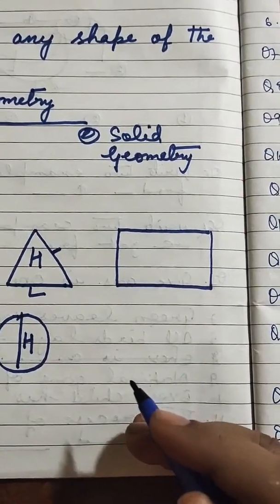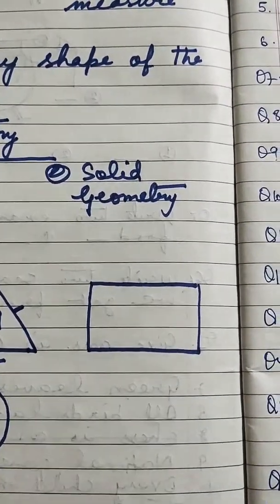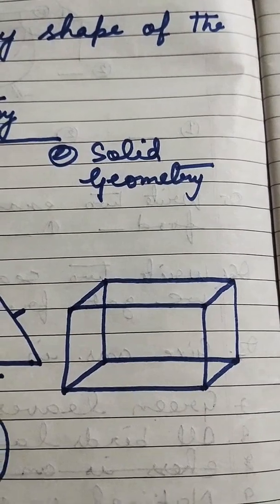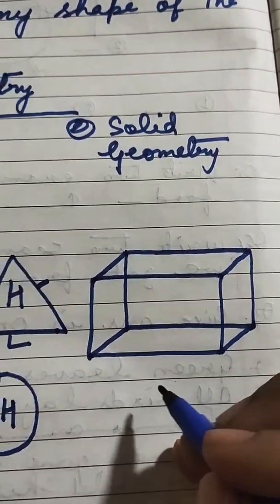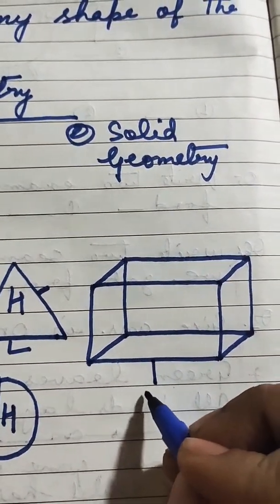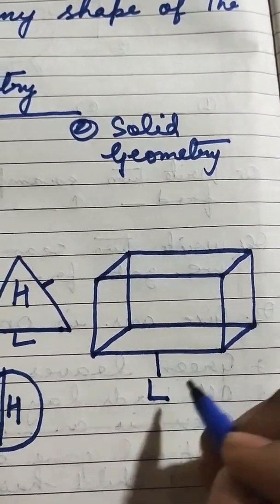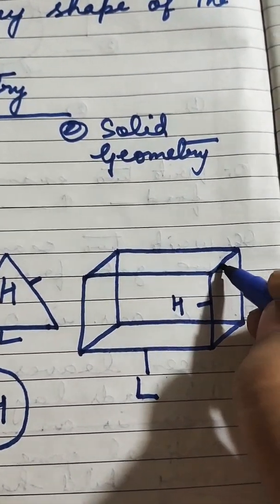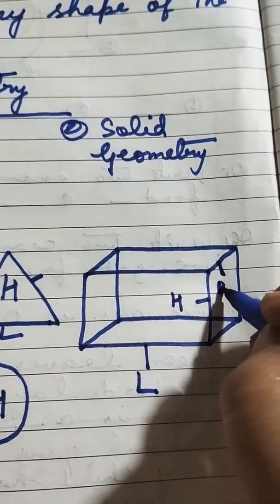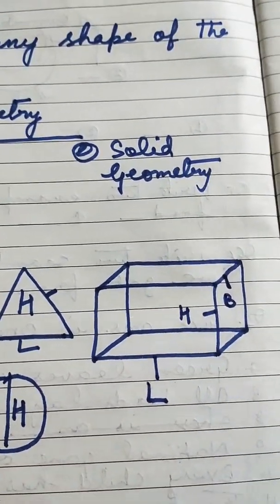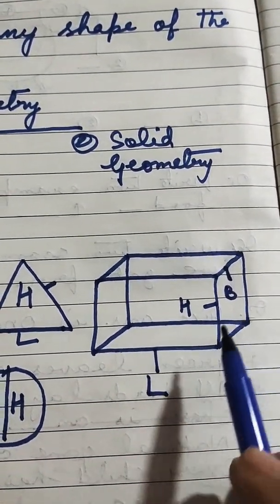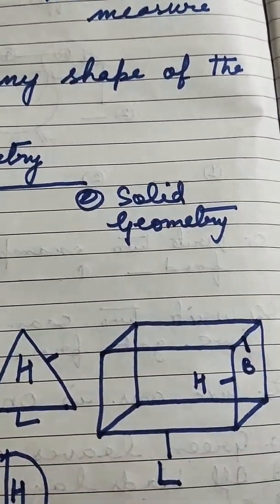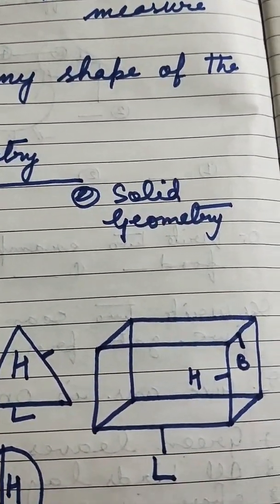Now come to solid geometry. What is solid geometry? Look at here students — this is a 3D shape. This is cuboid. You can see here length, this is height and this is breadth. So this is a three dimensional shape, and it is in solid geometry. Clear, students?